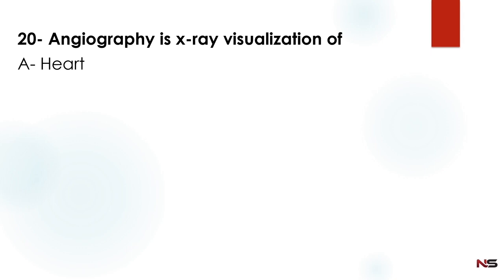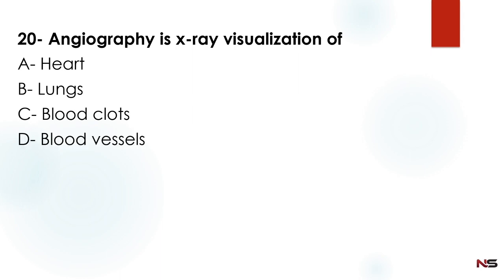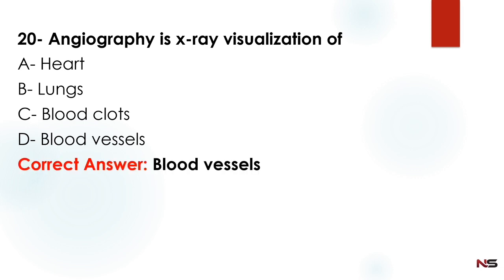Angiography is X-ray visualization of — Option A: heart, Option B: lungs, Option C: blood clots, Option D: blood vessels. The correct answer is blood vessels — option D. Angiography is X-ray visualization of blood vessels.